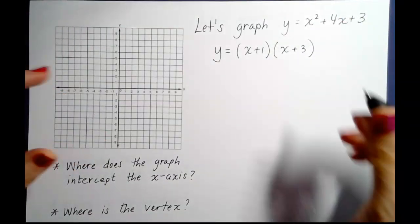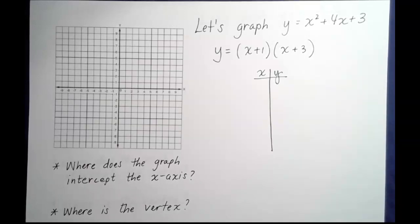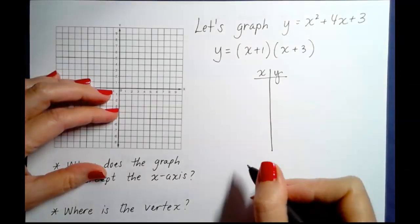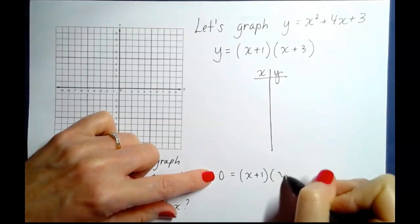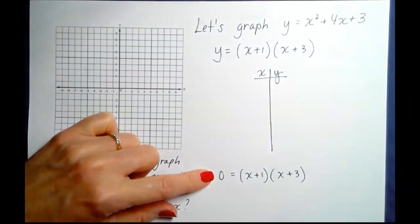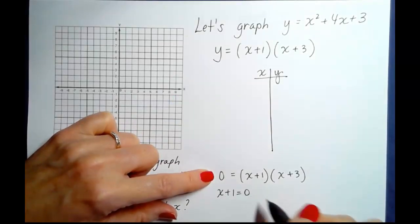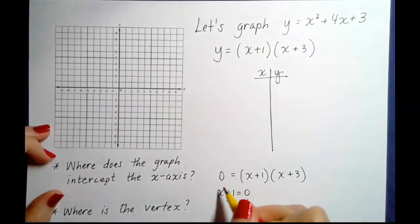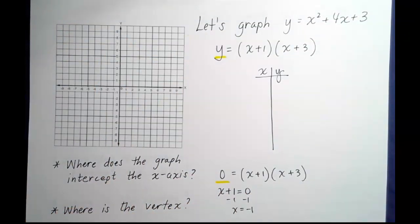We've done a lot of work with x-y charts, so let's use one here and rely on information we already know to plot some points. If we replace y with 0, we can solve using the zero product property by factoring and setting each factor equal to zero. Setting x + 1 equal to zero gives x equals negative 1.